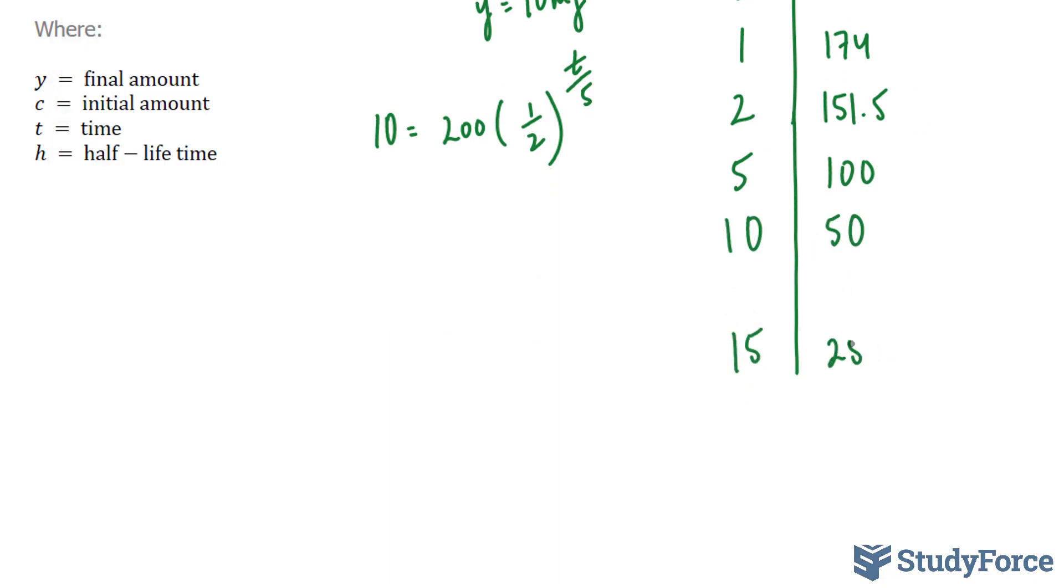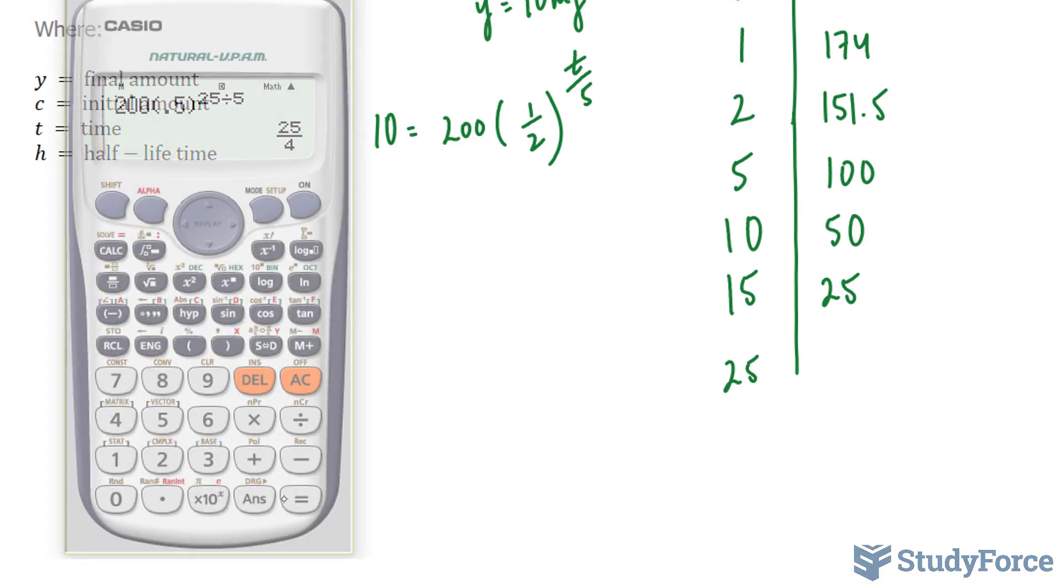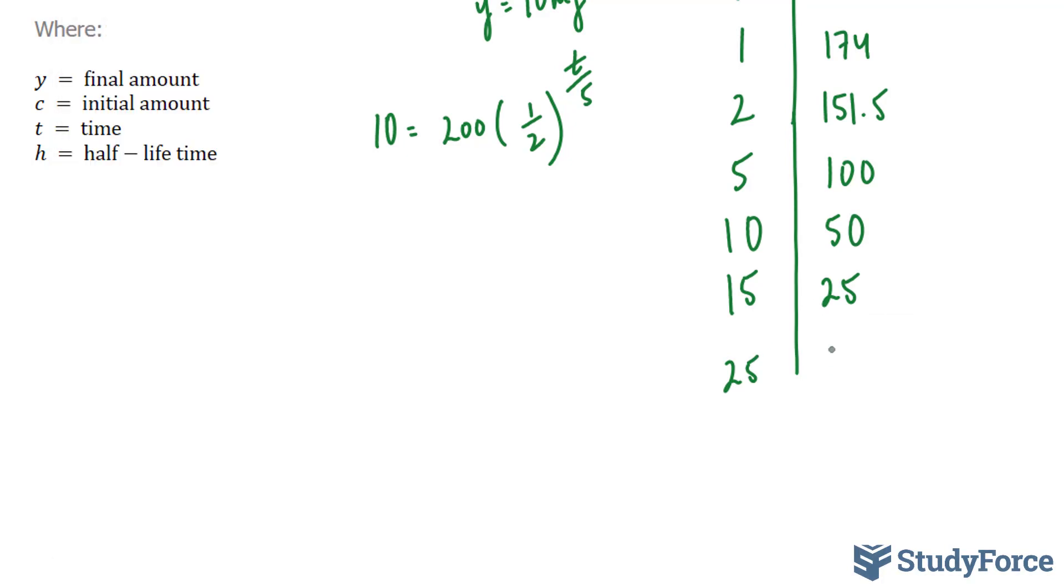So still not at the point that we want it. Let's jump to 25. We end up with 6.25.